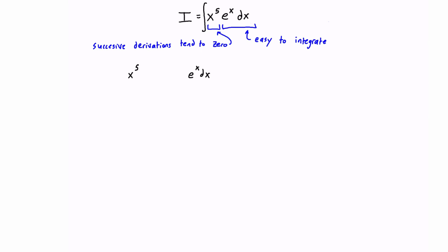In that case it's going to be the x to the fifth. We're going to take the derivative of x to the fifth, which is 5x to the 4, then 20x to the 3, then 60x squared, then 120x, then 120, and then we derive it again and we're left with 0. So these successive derivations have tended to 0.